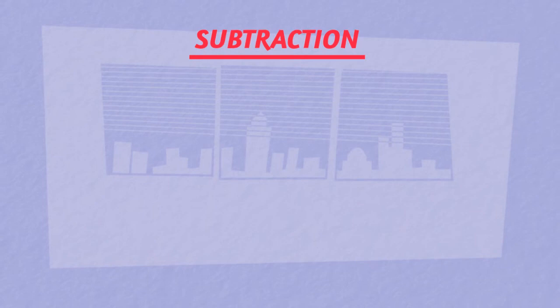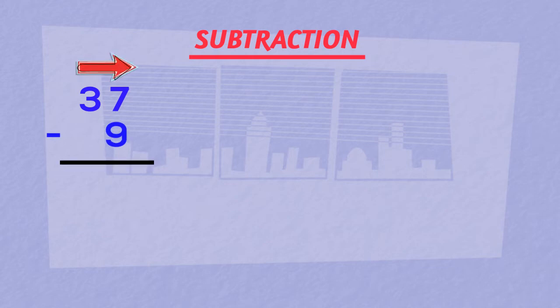Now let's start subtracting. We take number 37 and subtract 9 from it. As this is a speed math method, we will go left to right. So 3 comes down as it is.